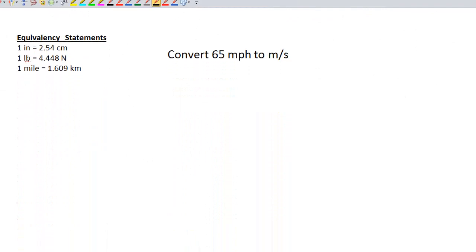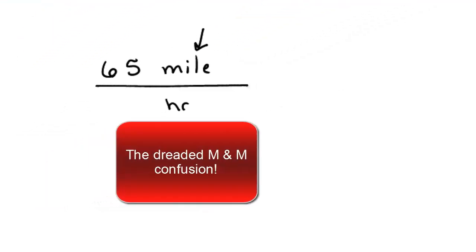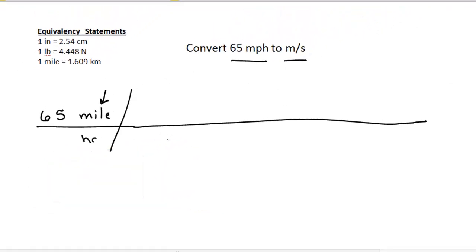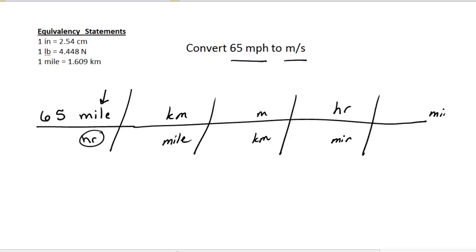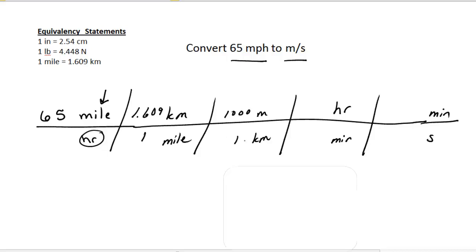Let's look at our third case. We're going to convert 65 miles per hour to meters per second. I'll start out with 65 miles over hours — and I recommend that you write out 'miles' because if you read it as an M, you're going to confuse miles and meters. Then put in a long line and start doing my conversions. I can go from miles to kilometers, then from kilometers to meters. And I'll worry about my hour units: from hours to minutes, and from minutes to seconds. Filling in all my equivalency statements: 1.609 kilometers over 1 mile, 1,000 meters per 1 kilometer, 60 minutes in 1 hour, and 60 seconds in 1 minute.